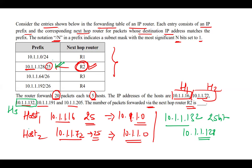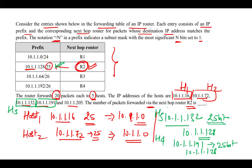For host 4, the IP address is 10.1.1.191. If we mask it with a 25-bit net mask, we get 10.1.1.128. So this IP address is also going to forward its routing packet via router R2. Whether masked with 25 bits or 26 bits, we get the same result. So host 3 and host 4 can both forward their packets via router R2.